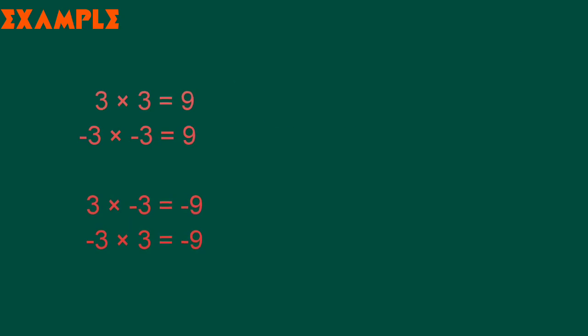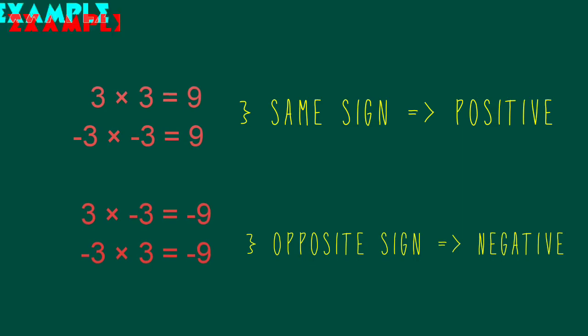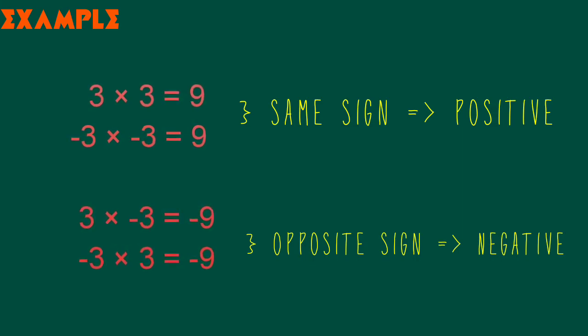In this example, on multiplying 3 having the same sign we get plus 9, whereas multiplying 3 having opposite signs we get minus 9.